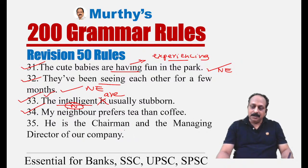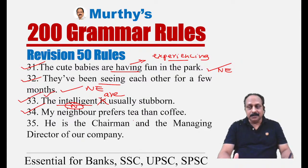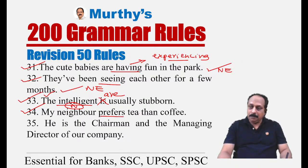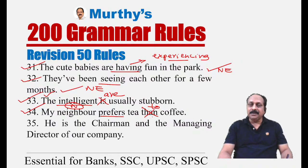Sentence thirty-four: 'My neighbor prefers tea than coffee.' The verb 'prefer' takes the preposition 'to,' not 'than.' This is a common error. Comparative adjectives like anterior, posterior, senior, junior, superior, inferior, preferable, prior, elder — and also the verb 'prefer' — all take the preposition 'to.' The correct sentence: 'My neighbor prefers tea to coffee.'